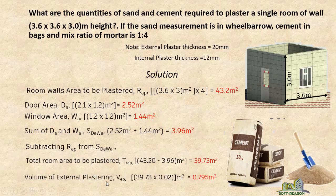For the volume of external plastering, we take the total room area to be plastered and multiply by 0.02. This 0.02 is the external plaster thickness — 20mm converted to meters gives 0.02 meters. Carrying out the multiplication, we get the volume of external plaster equal to 0.795 cubic meters.